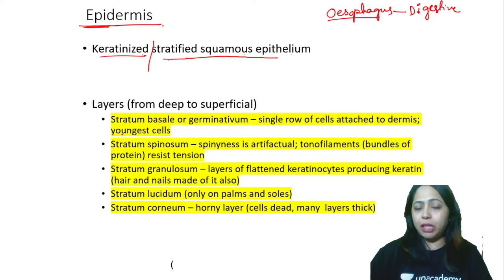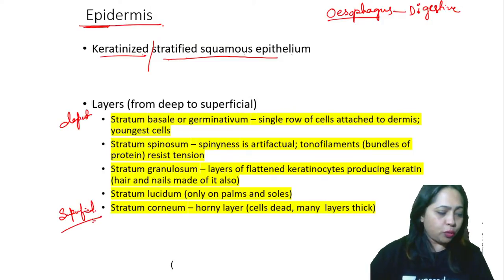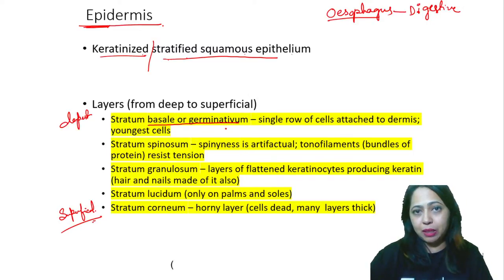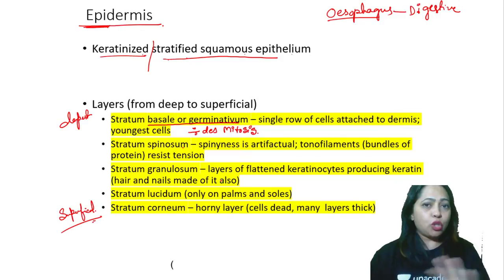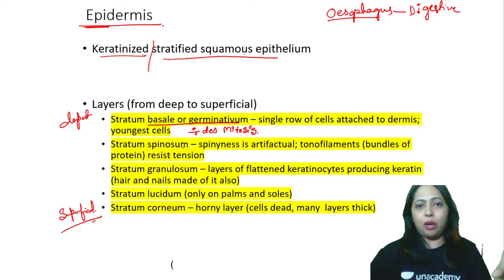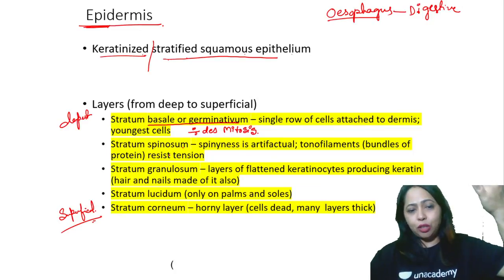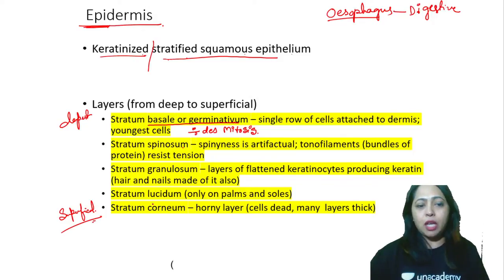From deep to the superficial layer, the deepest one is the stratum basale, and the most superficial one is the stratum corneum. You have stratum basale — also called stratum germinativum — this is the only one which divides by mitosis, giving rise to daughter cells. Then stratum spinosum. All other layers do not divide, so whatever divides here is pushed to the outer layers. Basale sits on the basement membrane. On top you see spinosum, then granulosum, then lucidum, then corneum. The outermost surface layer is the corneum.